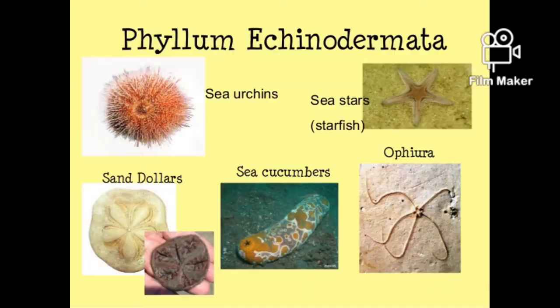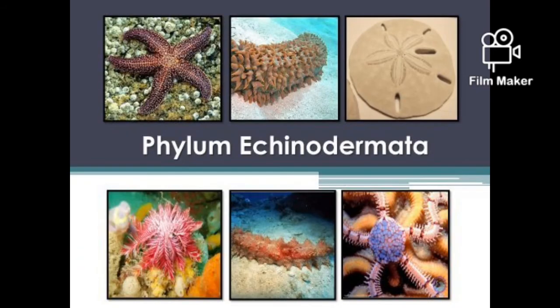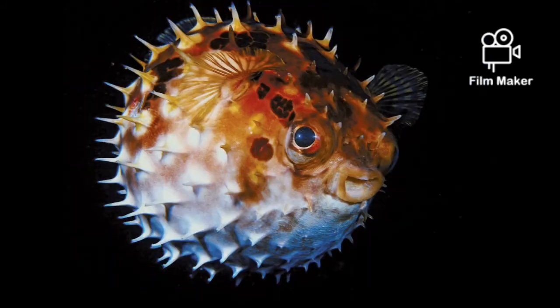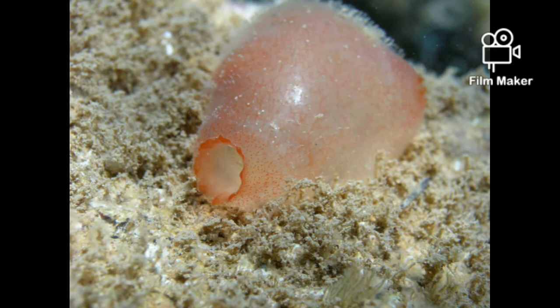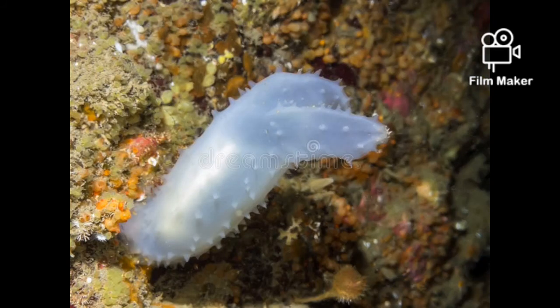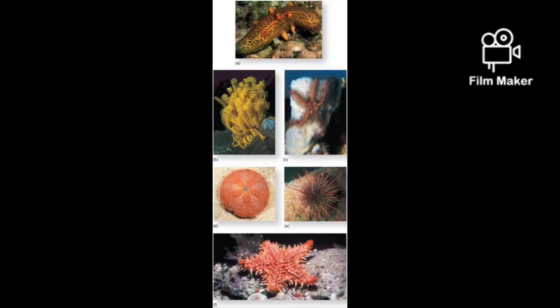The eighth phylum is Phylum Echinodermata. 'Echino' means spine and 'dermata' means skin, so echinodermata are spiny-skinned animals. Their mesodermal skeleton is made up of calcium carbonate. They are triploblastic, coelomate, and radially symmetrical animals. They have the organ level of organization. They are mostly aquatic and marine. They have a water vascular system which helps in transportation, respiration, and also enhances locomotion. Examples are starfish, Holothuria, Ophiura, and Antedon.